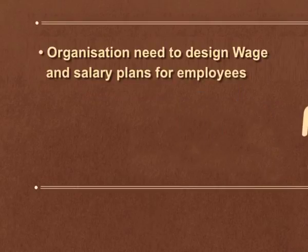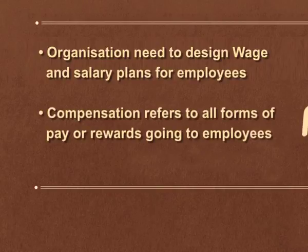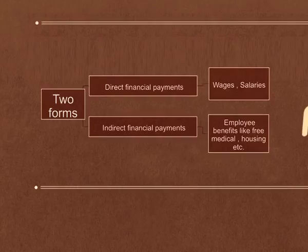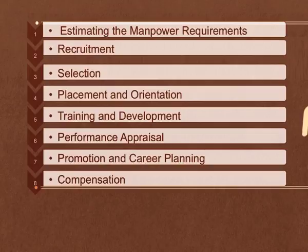The last step, step eight, is compensation. Organizations need to design a wage and salary plan for employees. Compensation refers to all forms of pay or rewards going to employees. It may be in the form of direct financial payments such as wages, salaries, incentives, commissions, and bonuses, or indirect payments like paid insurance, paid vacations, and medical insurance.